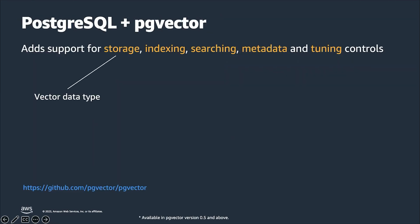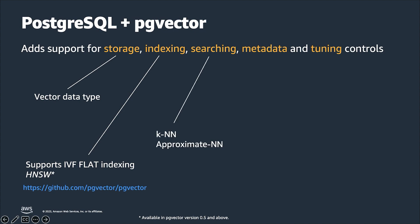PG Vector introduces a new data type called Vector, and supports IVF flat and, more recently, HNSW indexes. IVF flat — inverted flat file — groups similar vectors into clusters called lists, and searches compare vectors within the same cluster to improve performance. HNSW, which stands for Hierarchical Navigable Small World, is among the top-performing indexes for vector similarity search, and is available with PG Vector 0.5 and above. By default, PG Vector performs exact nearest neighbor search providing perfect recall, but approximate nearest neighbor search is also available, which trades some recall for performance.